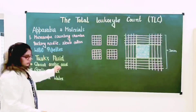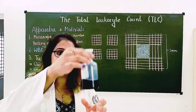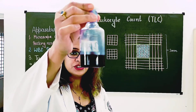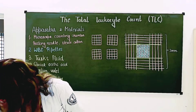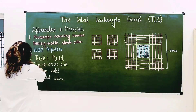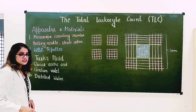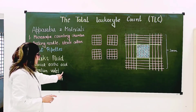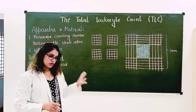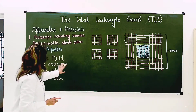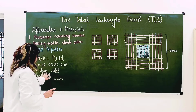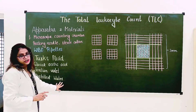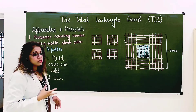Next, we need Turk's fluid, which is a purplish colored fluid used for dilution and staining. The composition of Turk's fluid is: 1.5 ml of glacial acetic acid and 1.5 ml of 1% gentian violet, both dissolved in 100 ml of distilled water.